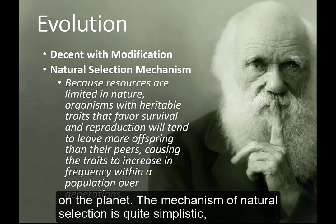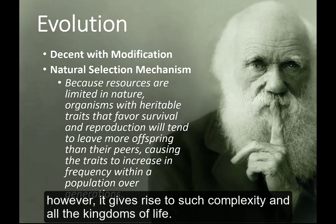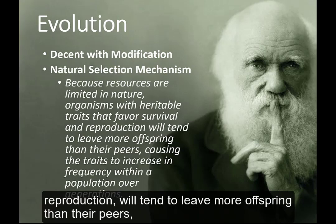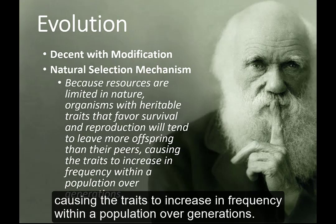The mechanism of natural selection is quite simplistic; however, it gives rise to such complexity in all the kingdoms of life. Natural selection states that organisms with heritable traits that favor survival and reproduction will tend to leave more offspring than their peers, causing the traits to increase in frequency within a population over generations.